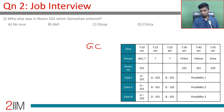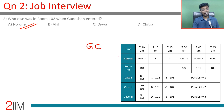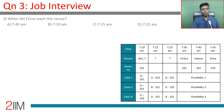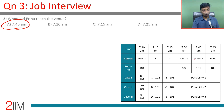Question two: Who else was in room 102 when Ganeshan entered? G and C are in 102, but Ganeshan is the first to enter — so no one else was in the room when he entered. Question three: When did Erina reach the venue? Erina is in room 103 and is the last to arrive, at 7:45 AM.